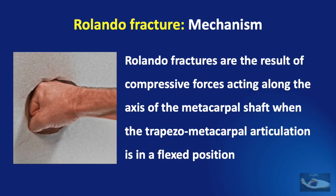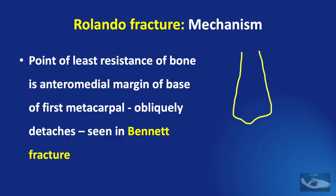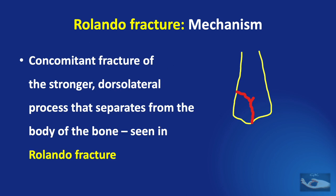These fractures are the result of compressive forces acting along the axis of the metacarpal shaft when the trapezio-metacarpal articulation is in a flexed position. This typically happens in a closed fist injury when hitting another person or a wall. When this force is applied, the point of least resistance is the anteromedial margin of the base of the first metacarpal, which obliquely detaches — this is typically seen in a Bennett fracture. When the force is more, there is a concomitant fracture of the stronger dorsolateral process that separates from the body of the bone, resulting in a Rolando fracture.